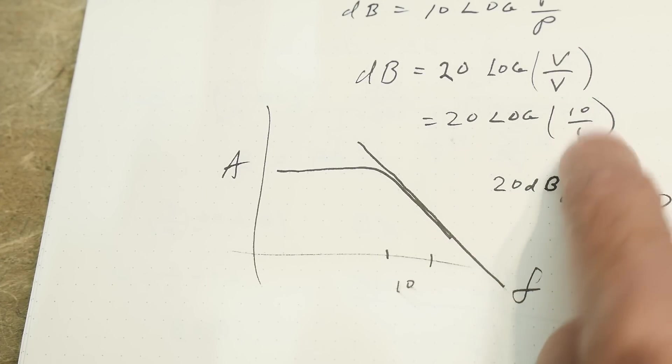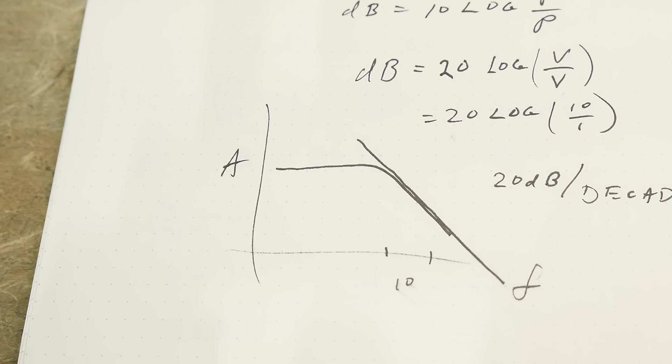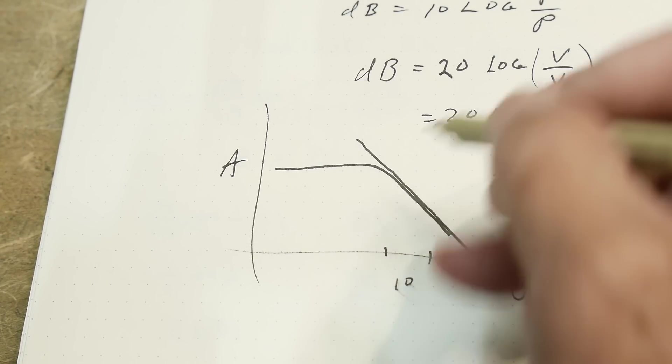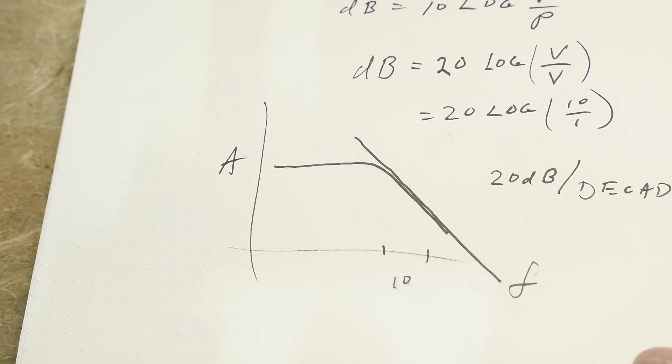If the frequency changes by 10, then the amplitude will change by 20 dB, which is basically 10 because it's V over V. That's the way the 20 dB per decade came from.